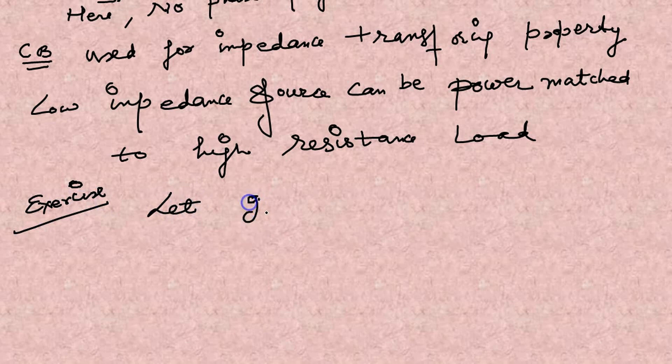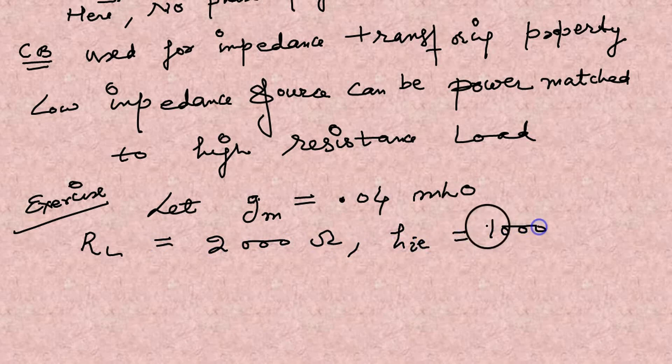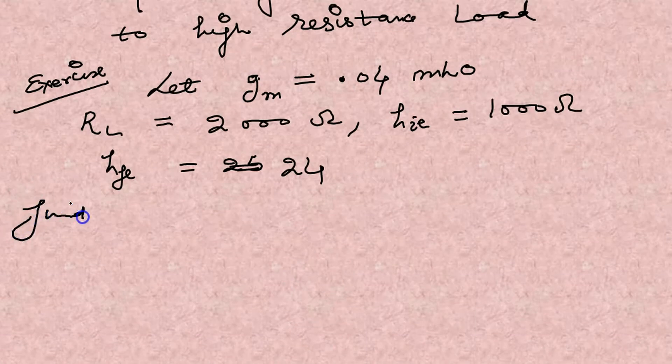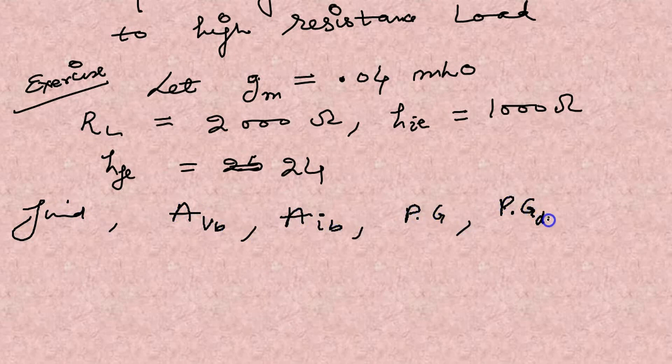Now a small exercise for you. Let for a particular transistor gm is minus 0.04, RL is 2000 ohm, HIE is 1000 ohm, HFE is 24 for a particular transistor. Then the exercise is you just calculate all the parameters like voltage gain, current gain, power gain, power gain in decibels, resistance input and output.